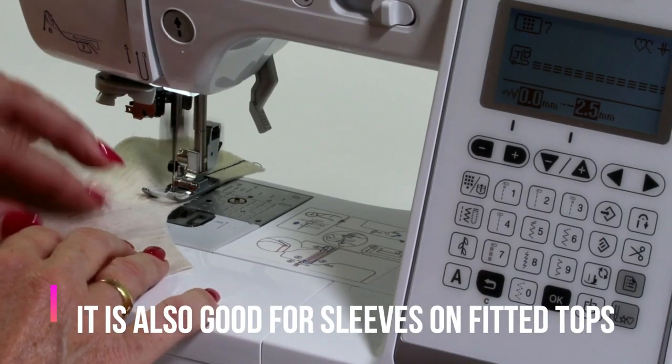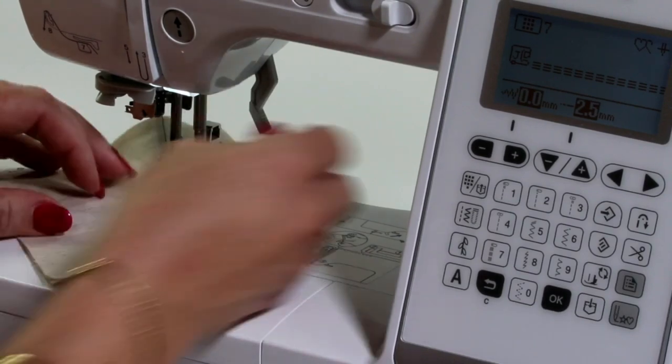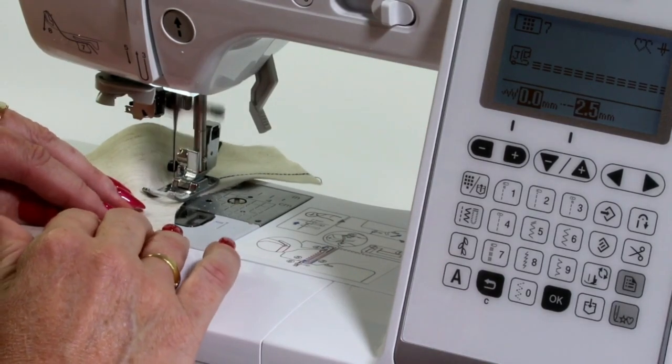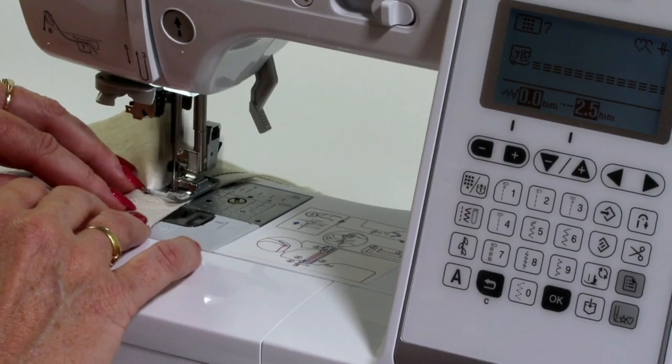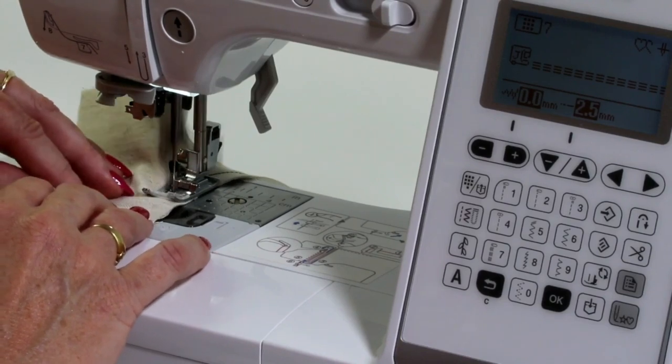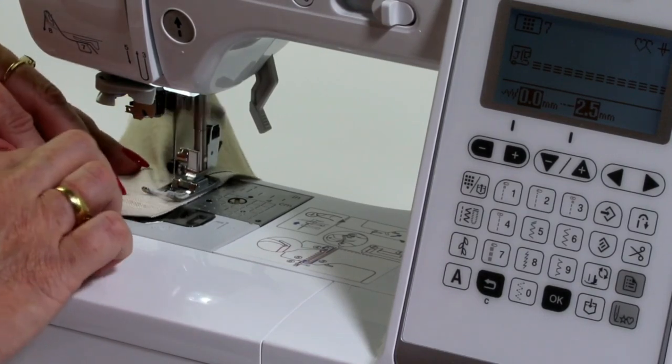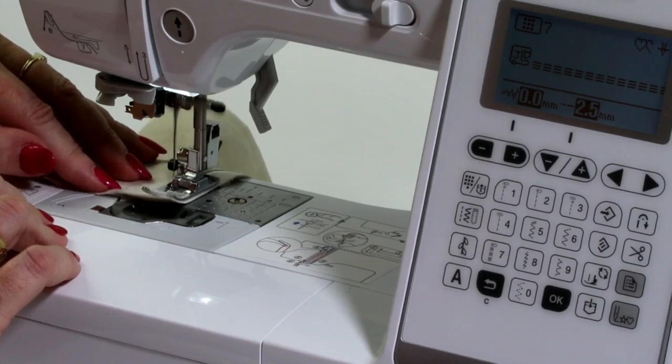Now the reason why I use it for, say, the crotch of pants or sometimes when I'm sewing in a sleeve is because it is reinforcing the seam. Most patterns tell you to double stitch your crotch seam and also for putting your sleeves in, but when you're doing this stitch, it's not necessary to do that.